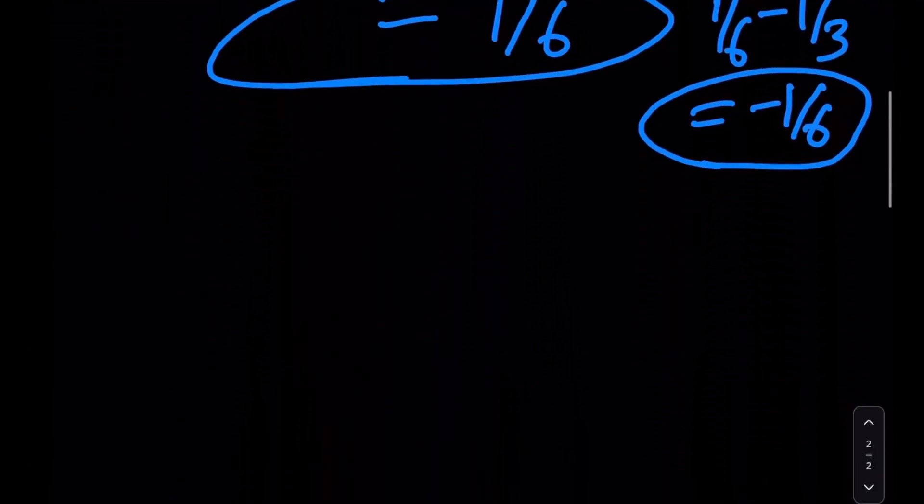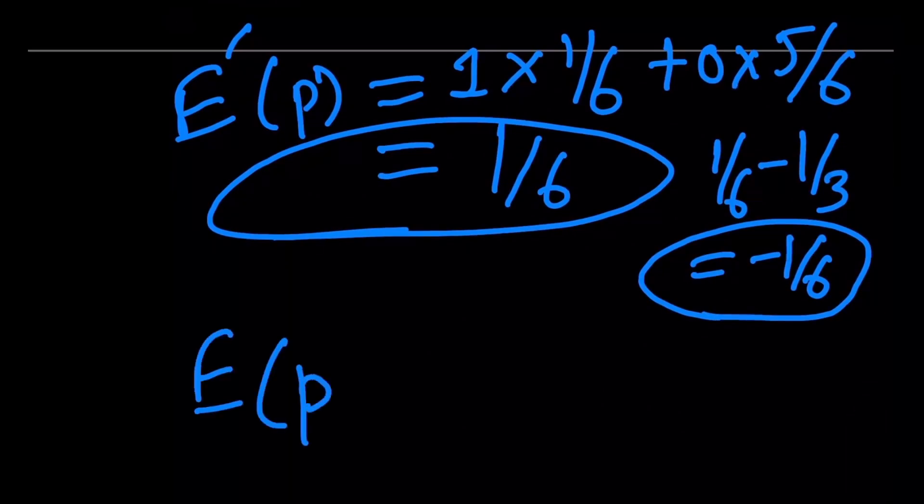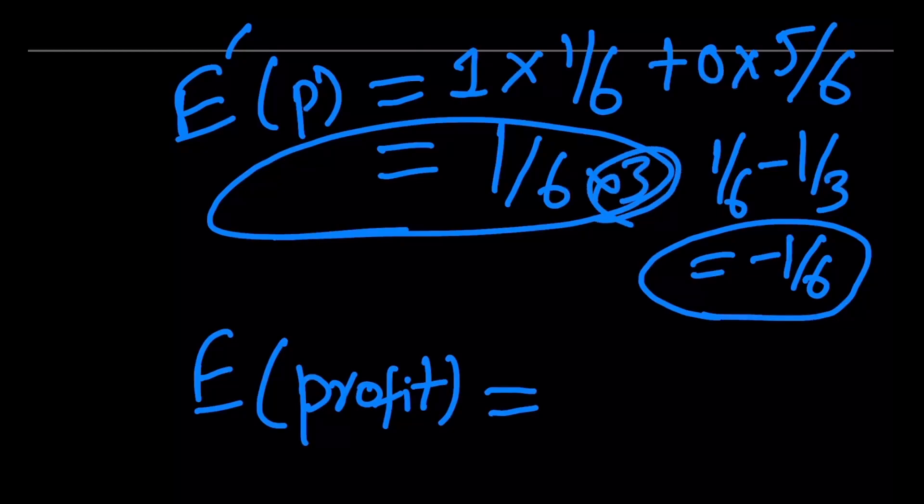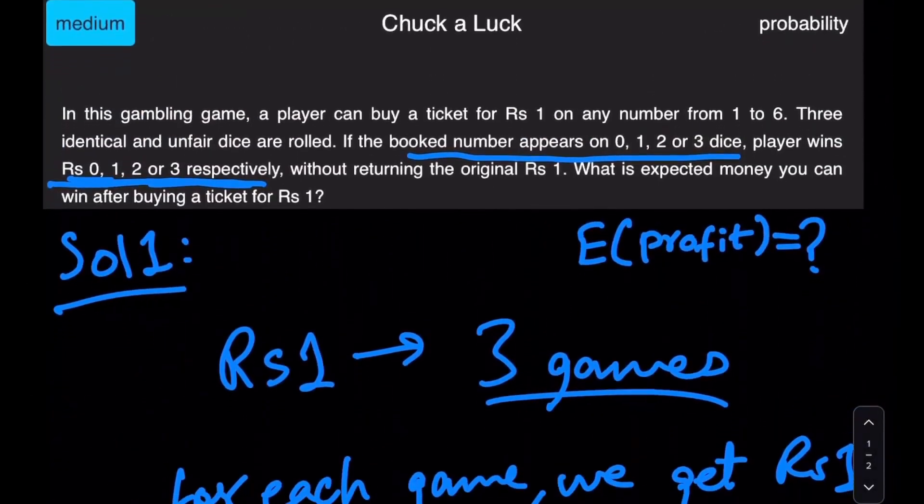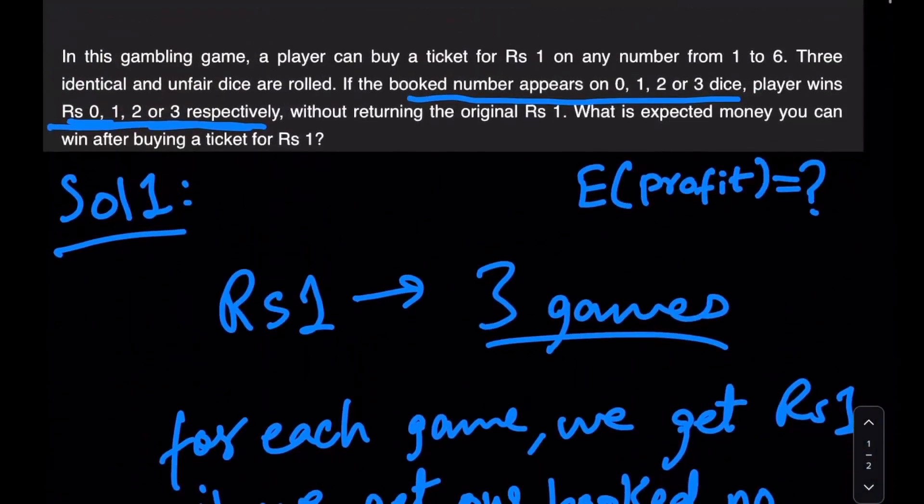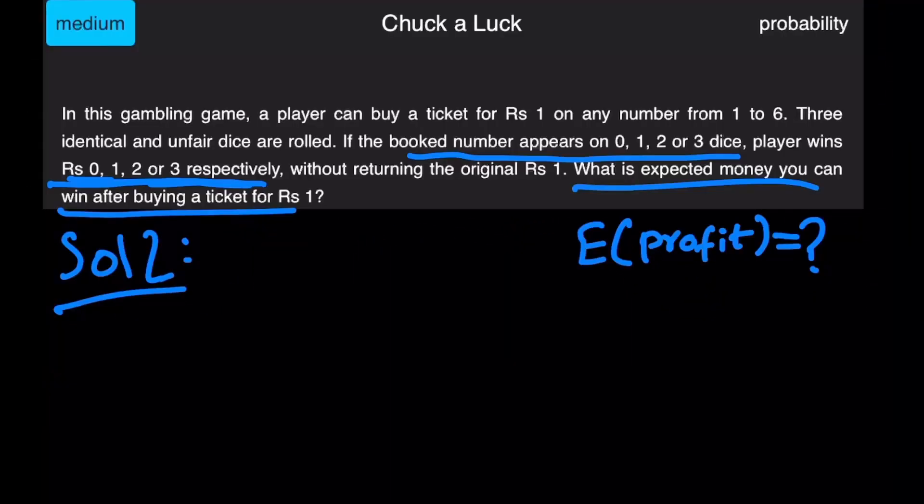We can already start to see this. Now again, to answer the initial question, the expected profit would just be three times this value, which would be 3 into 1/6, right? So that would mean 1/2. So we pay one rupee to play this game, as mentioned over here, and we win only on an average, the expected money that we are going to win after buying this ticket is going to be 1/2.